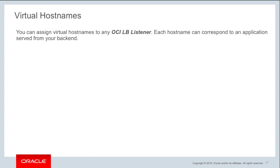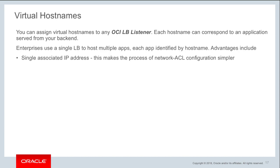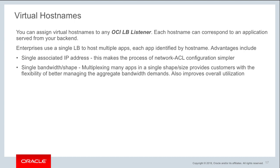Within the virtual hostname feature, you can assign hostnames to your OCI load balancer listener. Each hostname can then correspond to an application served from your backend servers. Enterprises commonly use a single load balancer to host multiple applications, where each different application is identified by a hostname attached to it. This makes it easier for network ACL configurations when multiple applications share a single IP address.